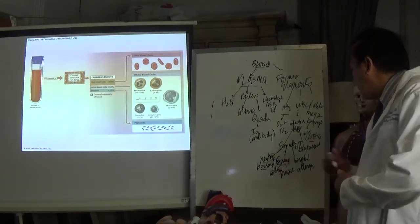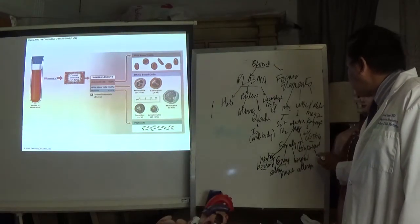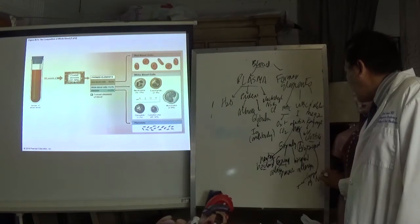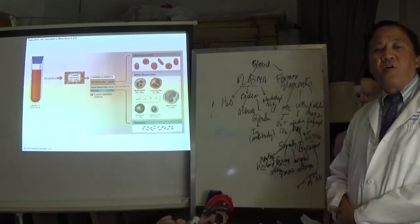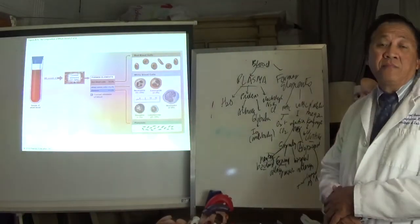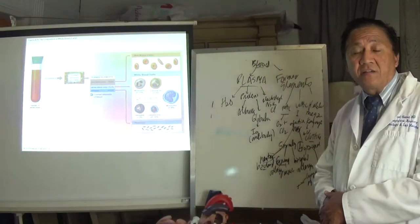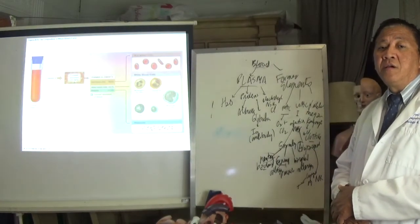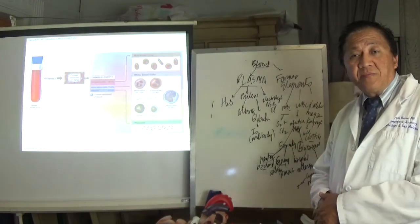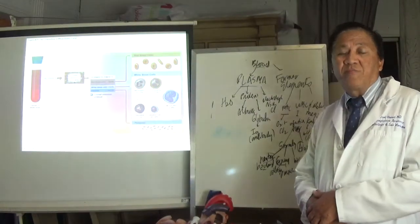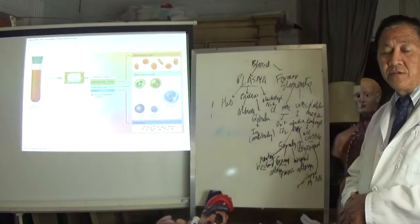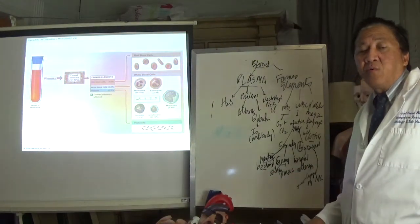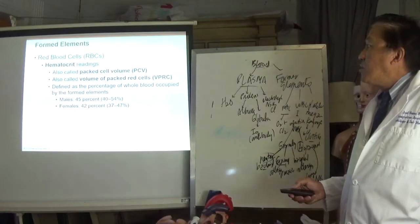Lymphocytes include three types: T cells, B cells, and NK (natural killer) cells. T lymphocytes are important for cell-mediated immunity — they can attack other cells directly, and include memory T cells and cytotoxic T cells. B cells are important in the production of antibodies: B cells become plasma cells, which produce immunoglobulins. These antibodies then attack antigens, providing humoral immunity.